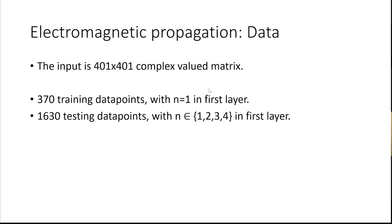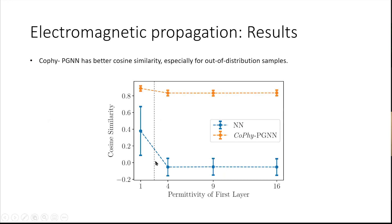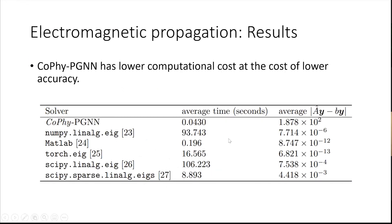Here are our results in terms of cosine similarity. The reason we take this cosine similarity is in the physics domain we care about the profile of the Fourier components rather than absolute MSE. As you can see here, when we compare the black box with CoPhy-PGNN, CoPhy-PGNN definitely has a much better cosine similarity than the black box.